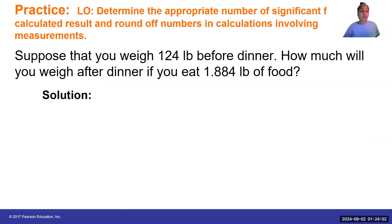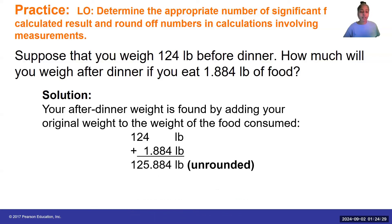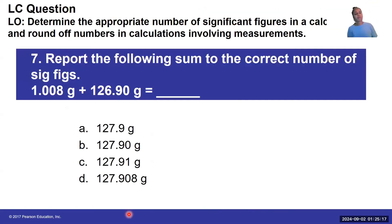Suppose you weighed 124 pounds before dinner. How much will you weigh after dinner if you eat 1.884 pounds of food? Your after-dinner weight is found by adding your original weight to the weight of the food consumed: 124 pounds plus 1.884 pounds equals 125.884. Notice there are no decimal places in our first value, but three decimal places in our second value. Your rounded off answer cannot have any digits after the decimal point because the first value has no decimal places. So solve the problem on your own — what do you think it would be?